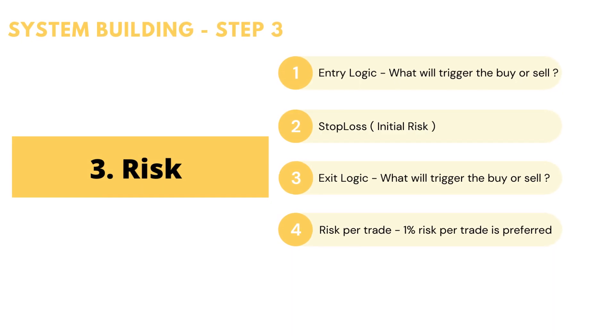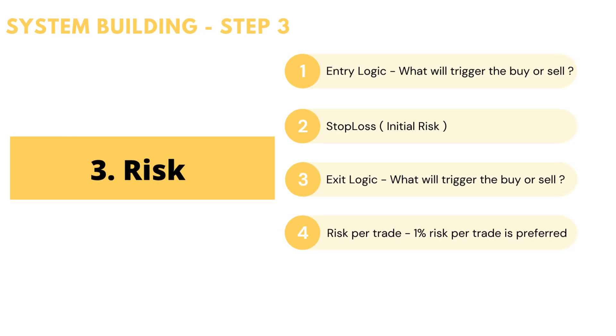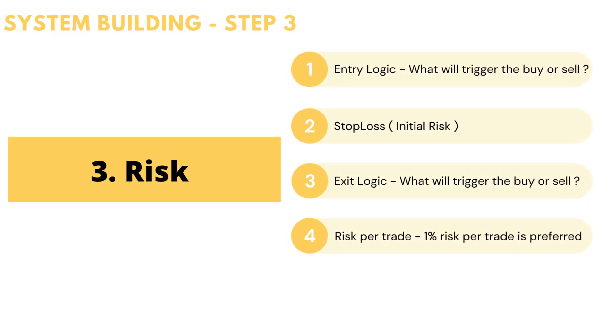The fourth sub-step is risk per trade — basically how much risk you want to take on a single trade. It should be within 1 or 2% of your capital depending on your risk appetite. For example, if your capital is 10 lakhs and you want to risk 1%, that is 10,000. No matter how sure you are about a setup, you will make sure that you don't lose more than 10,000 on that trade.